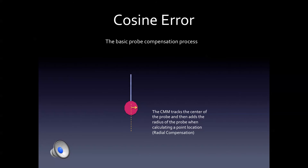The basic probe compensation process: as a probe moves around in the physical space of the machine, the CMM tracks the center of the probe. When it makes contact with the surface, it will then add the radius of the probe when calculating a point location. We call this radial compensation.